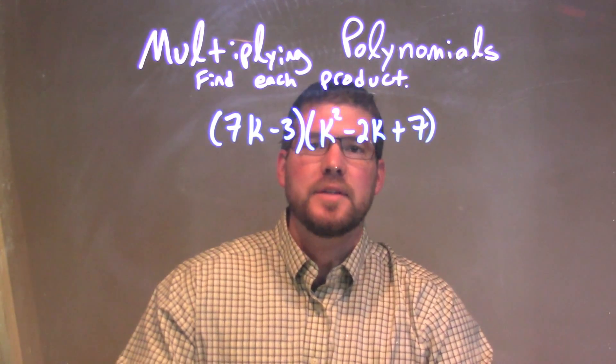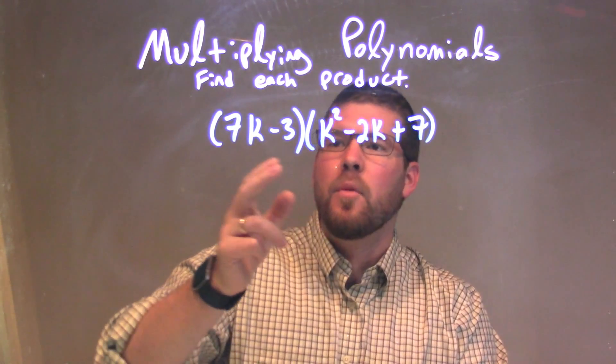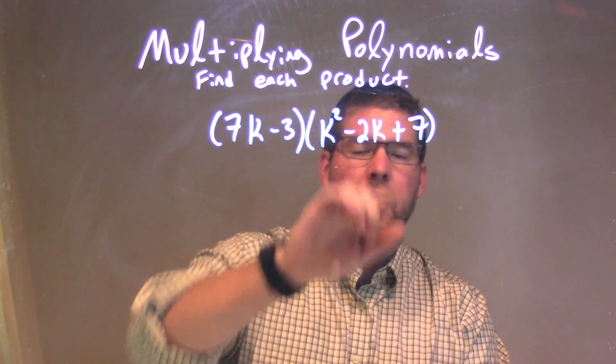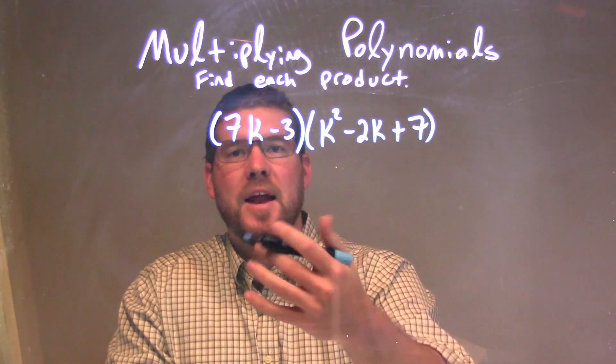We need to multiply all parts of our first parenthesis by all parts of our second parenthesis. Let's draw arcs to make sure we got everything.